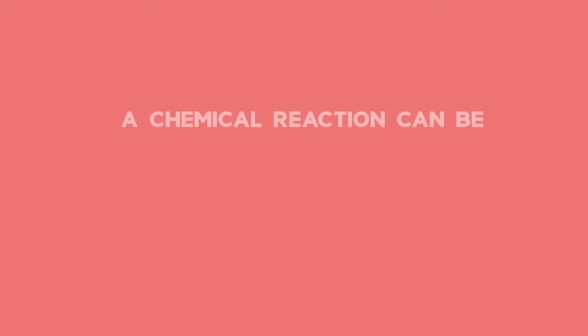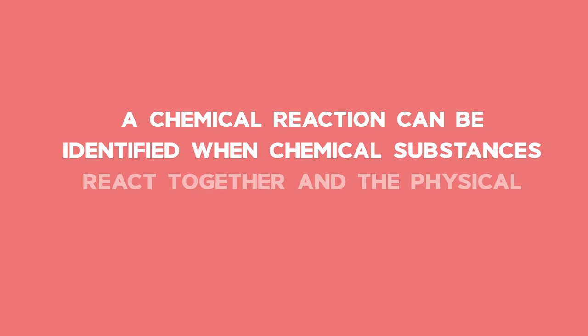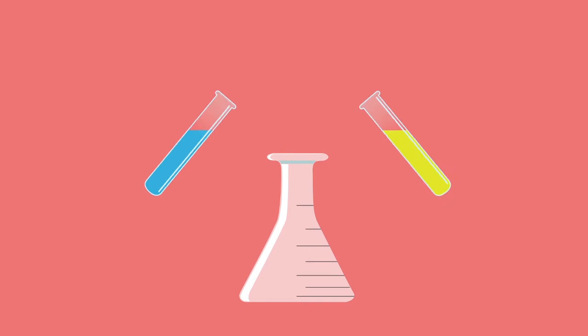A chemical reaction can be identified when chemical substances react together and the physical properties change. We see this when there is change in the chemical properties of the reactants. That means a new chemical is made.